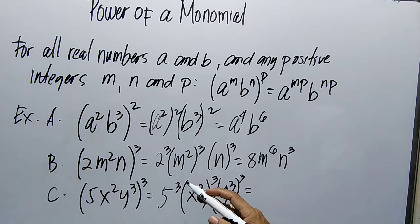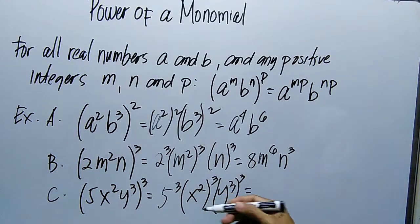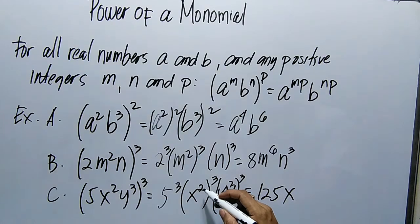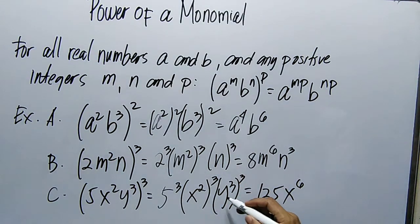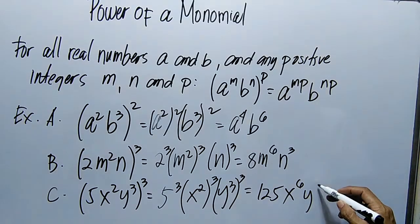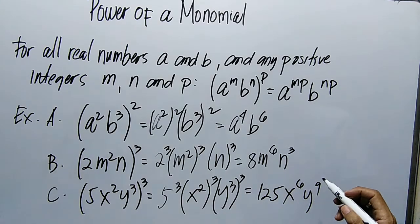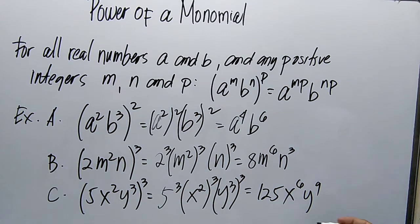Equals, si 5, kailangan natin multiply ito tatlong beses. 5 times 5, 25, times 5, 125. Then si X, multiply natin yan, 2 times 3, magiging 6. At saka si Y, magiging 9. So yung final answer, 125X to the 6th power, Y to the 9th power. So this is your final answer.